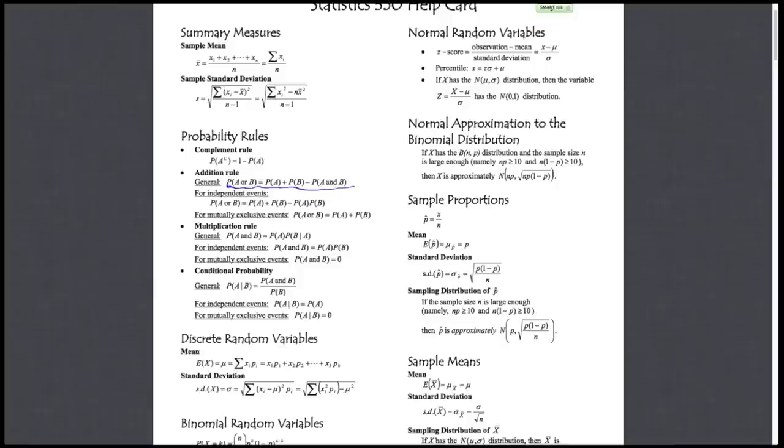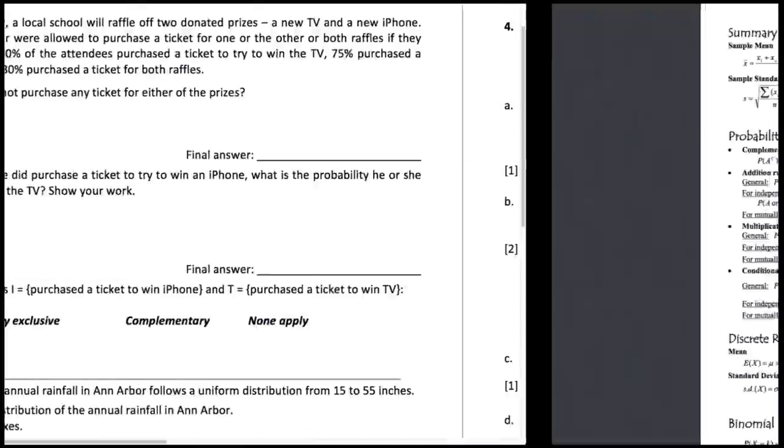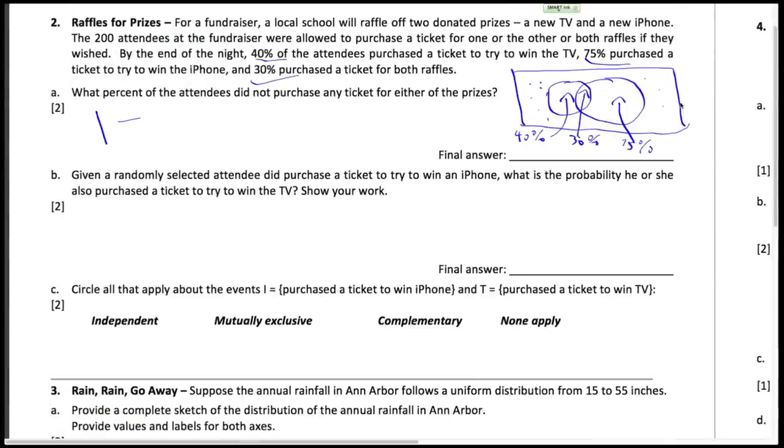And we can see through this picture, right? If we want this circular area, we want the probability that somebody did this plus this, but we've counted this center part twice, so we want to subtract that out.